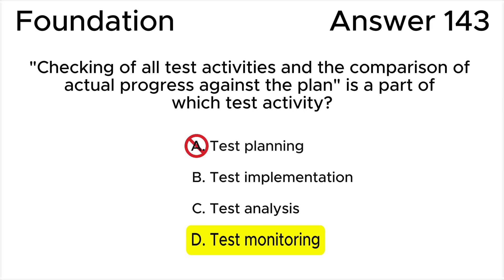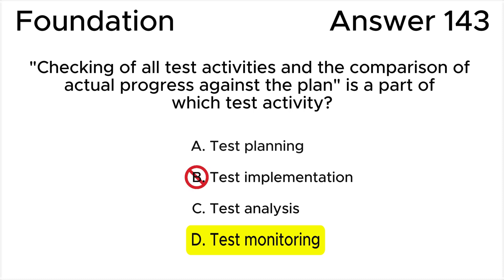Answer A is wrong because test planning consists of defining the test objectives and then selecting an approach that best achieves those objectives. At this phase, testers don't check actual progress against the plan. Answer B is wrong because test implementation includes creating or acquiring the test items necessary for test execution. At this phase, testers don't check actual progress against the plan.